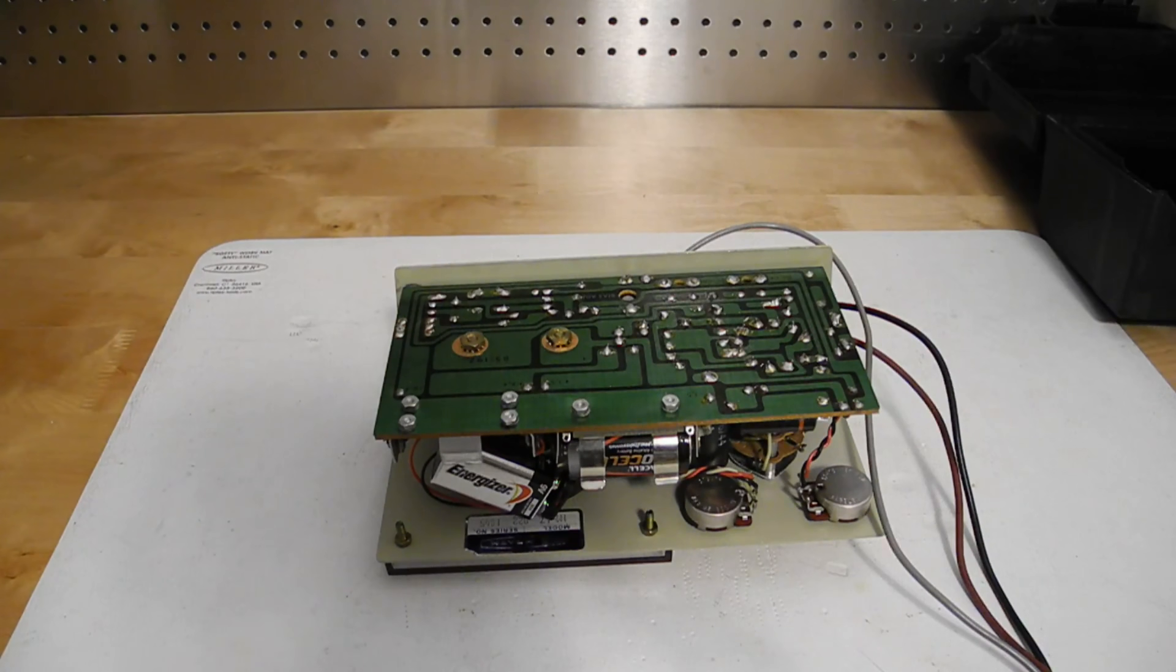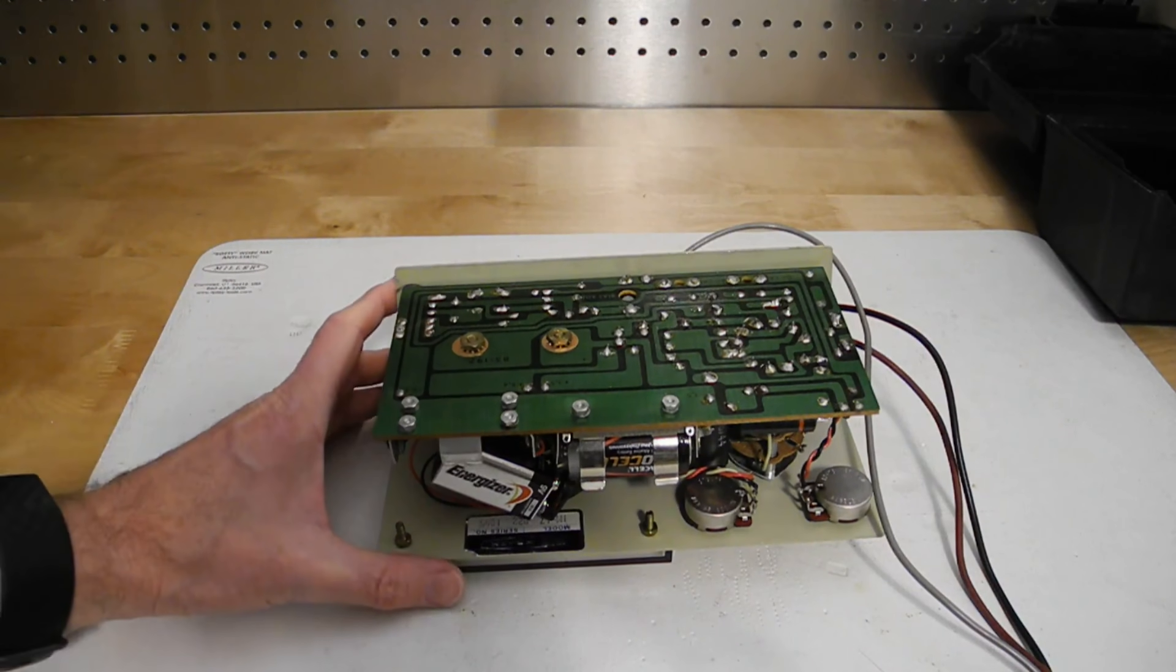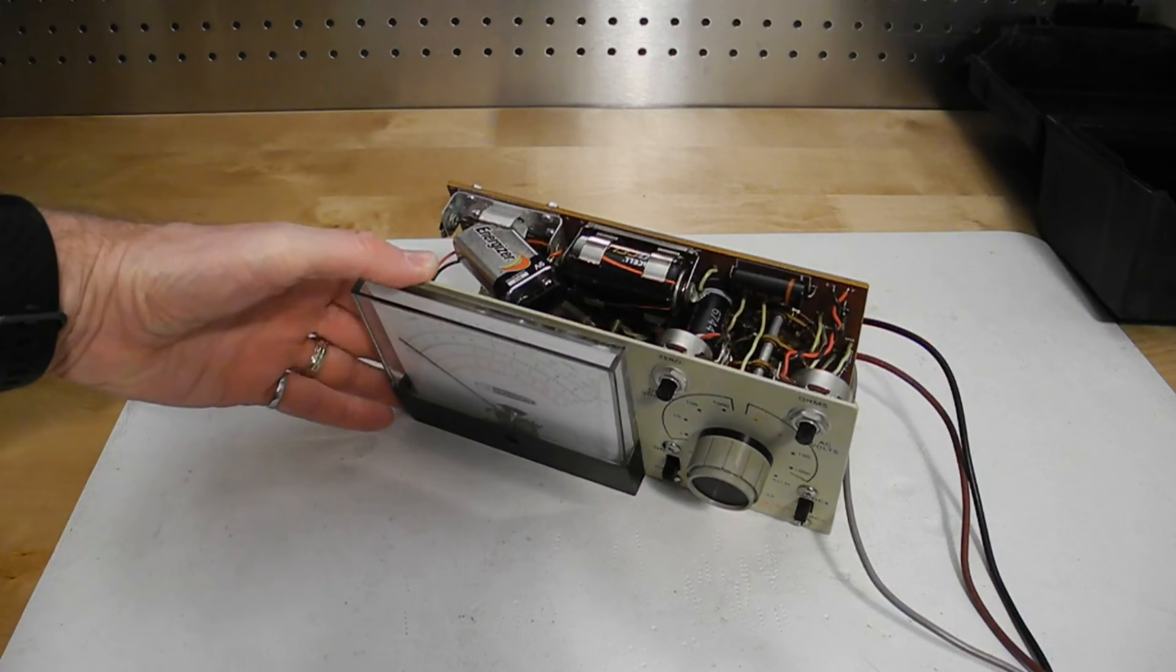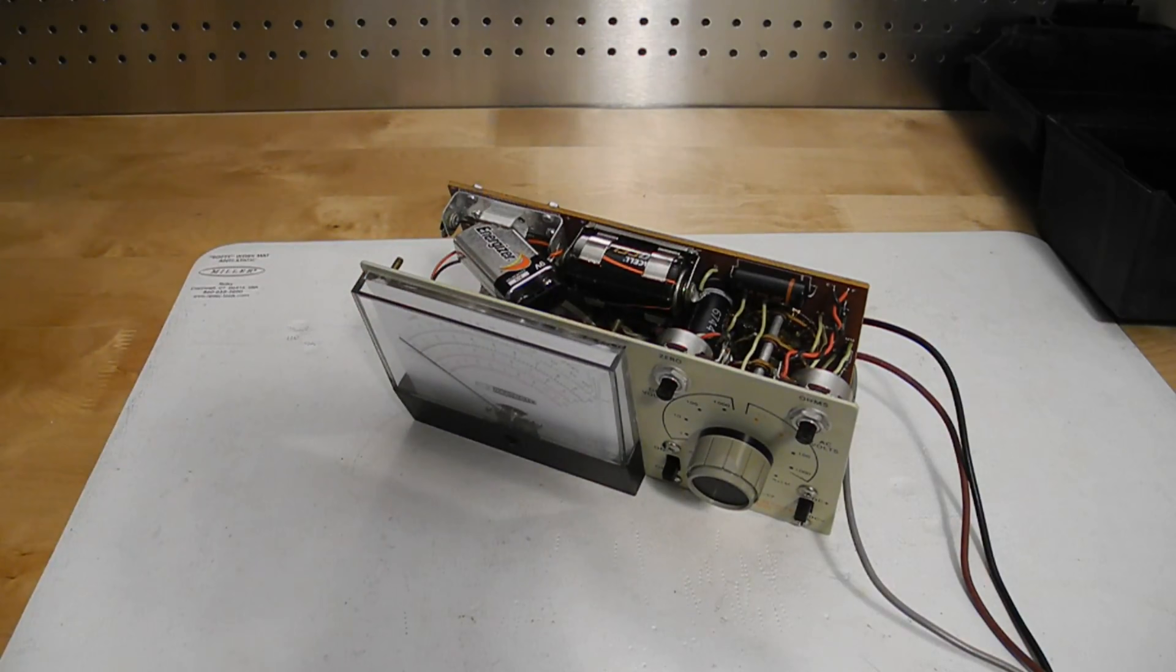Most circuitry is on a single printed circuit board while other parts are mounted on the L-shaped metal front panel. The PCB is made from a phenolic material and is single sided and silk screened.